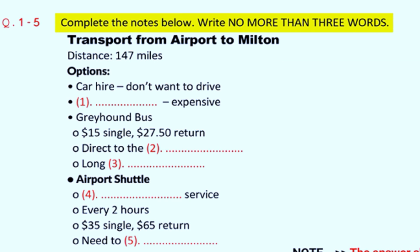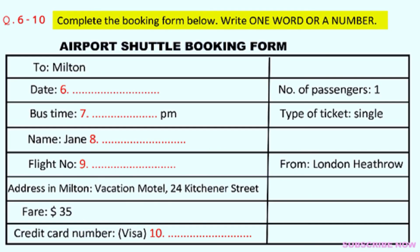So how much does that cost? That's $35 one way, $65 return, so it's a bit more expensive than the Greyhound. Oh, that doesn't sound too bad, especially if it'll take me straight to the hotel. But you do need to reserve a seat. Is it possible to make a booking right now, through you? Sure. Before you hear the rest of the conversation, you have some time to look at questions 6 to 10.